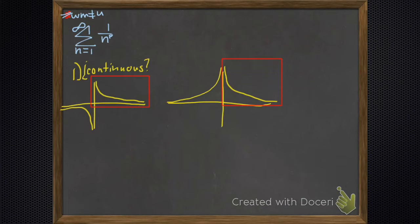But what if p was even? Then it would look like that. Still, continuous on the domain we care about. Well, what else do we need?